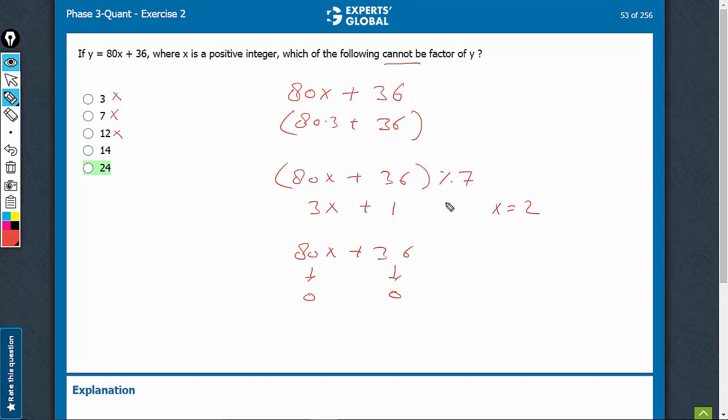14, just as 7 was possible, 14 will also be possible. See, 80x + 36, when divided by 14, leads to 10x as a remainder here and 8 as a remainder here. 10x + 8. Let me imagine, for x is equal to 2, we will have 20 + 8, 28, which will lead to a remainder of 0. So this is also possible.